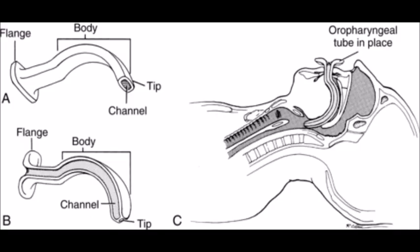In this video I'm going to demonstrate the correct way to insert an oropharyngeal airway. The parts of the oropharyngeal airway are the flange, body, tip, and airway channel.